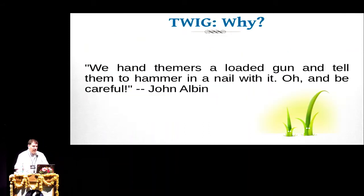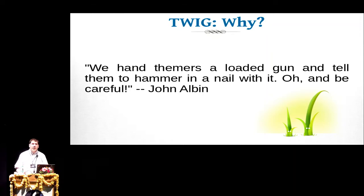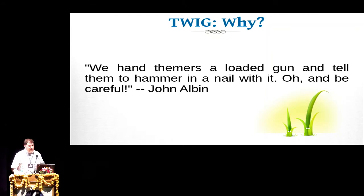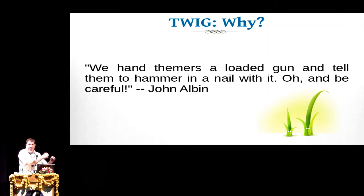Another interesting thing about Drupal 8 is the theming and templating library. In Drupal 7, it was a homegrown thing — PHP templates — which were kind of awful. One developer described it like this: in Drupal 7, we would hand the developers a gun and tell them to hammer in a nail with it and don't shoot themselves in the process. That's kind of how dangerous the theming layer was. In Drupal 8, we've adopted the Twig library, which is kind of an industry standard in PHP for doing templating.